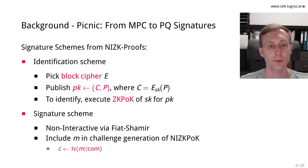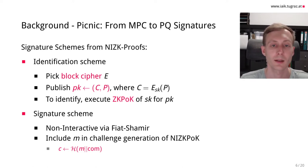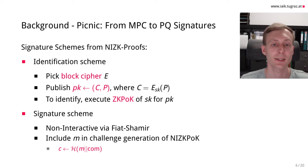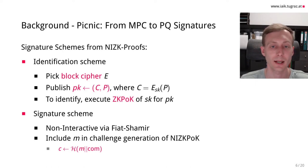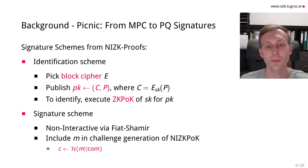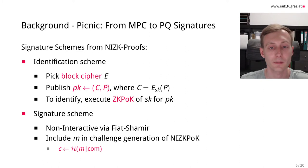From this non-interactive zero-knowledge proof, we can build a signature scheme. We first pick an identification scheme where we pick a block cipher used as a one-way function. We publish a public key consisting of a single plaintext-ciphertext pair, where the plaintext is evaluated under the secret key to give the ciphertext. To identify, we execute a zero-knowledge proof of knowledge for the secret key. To build a signature scheme, we make it non-interactive via the Fiat-Shamir transformation and include the message in the challenge generation. This technique is already used in existing schemes like the Schnorr signature.